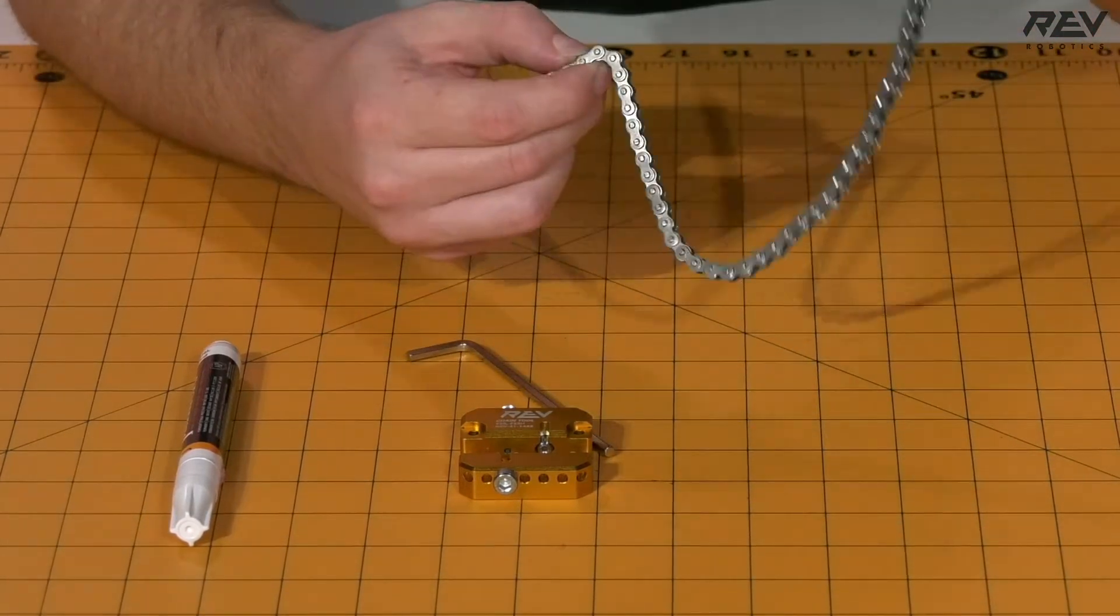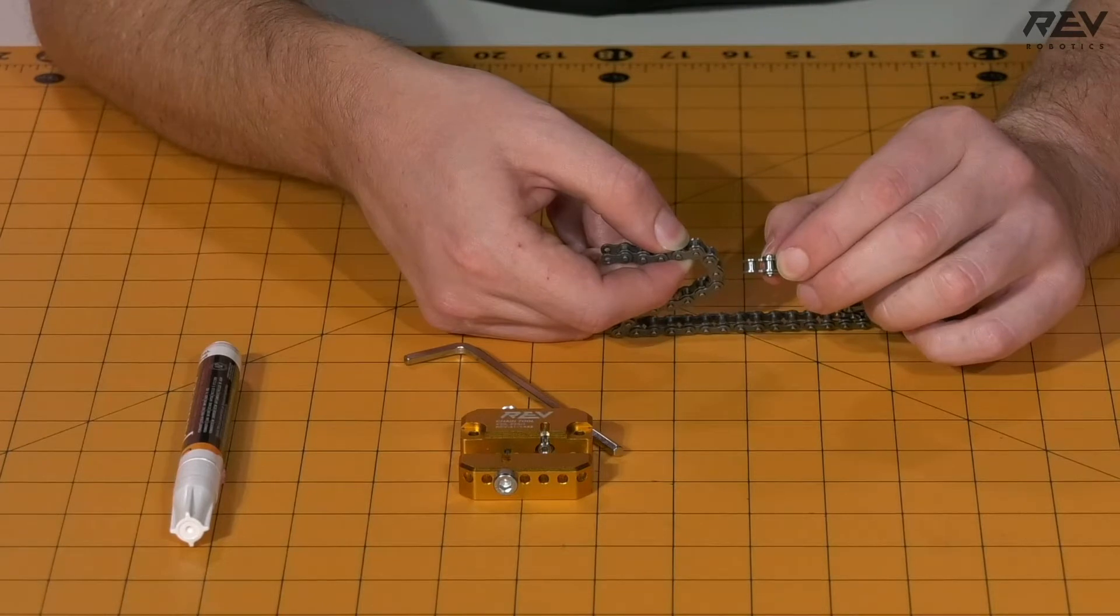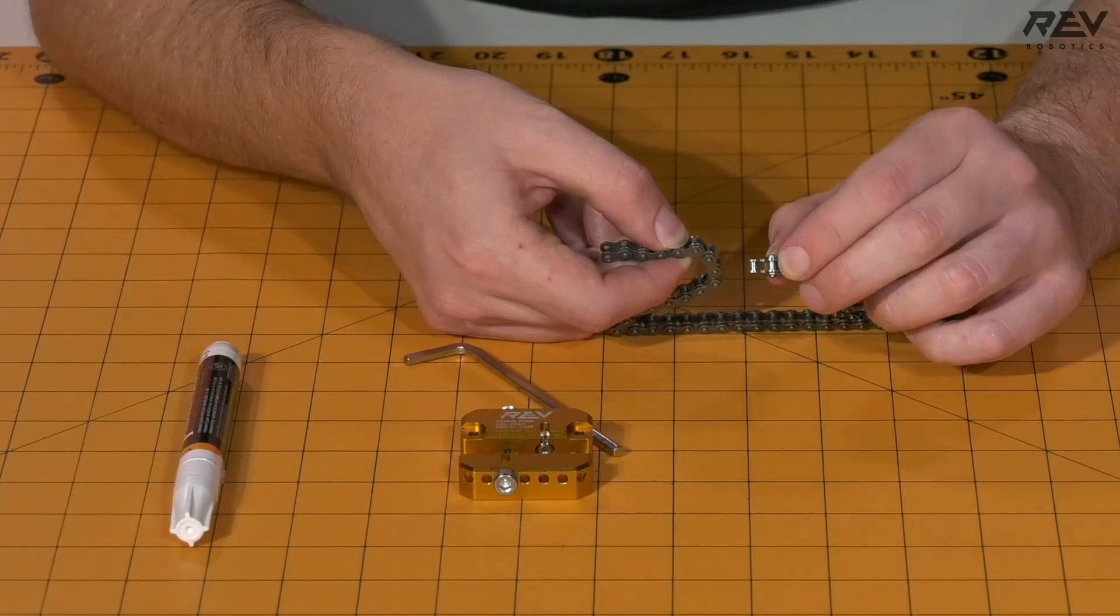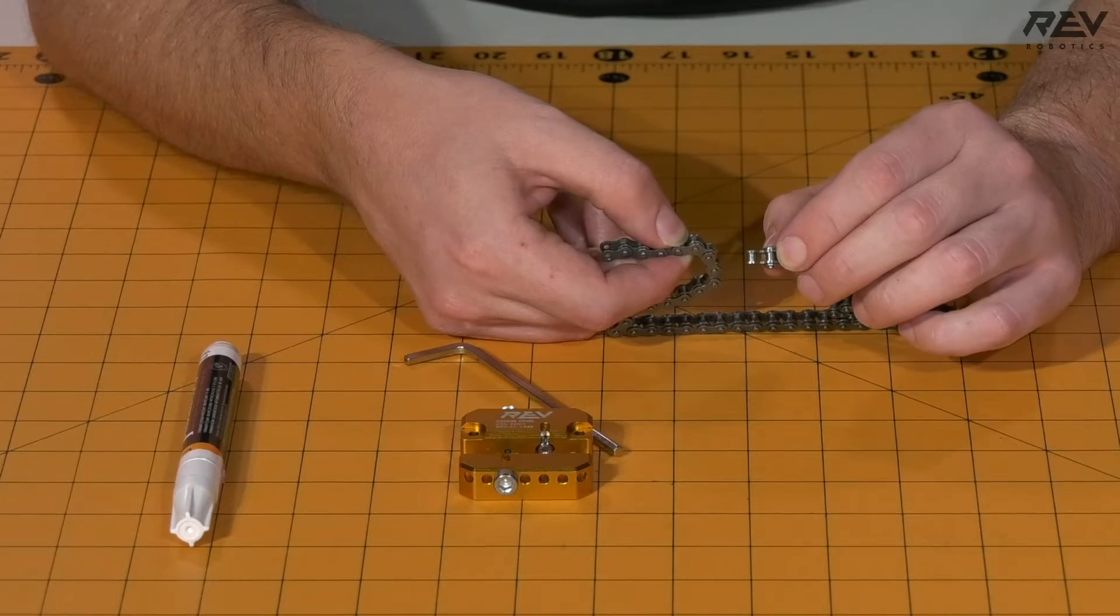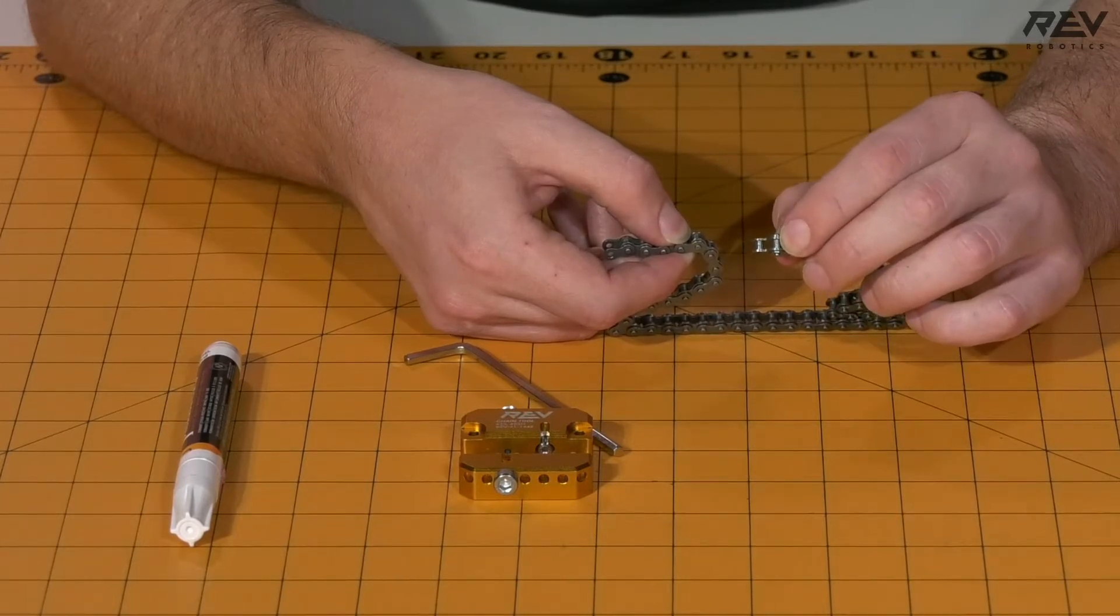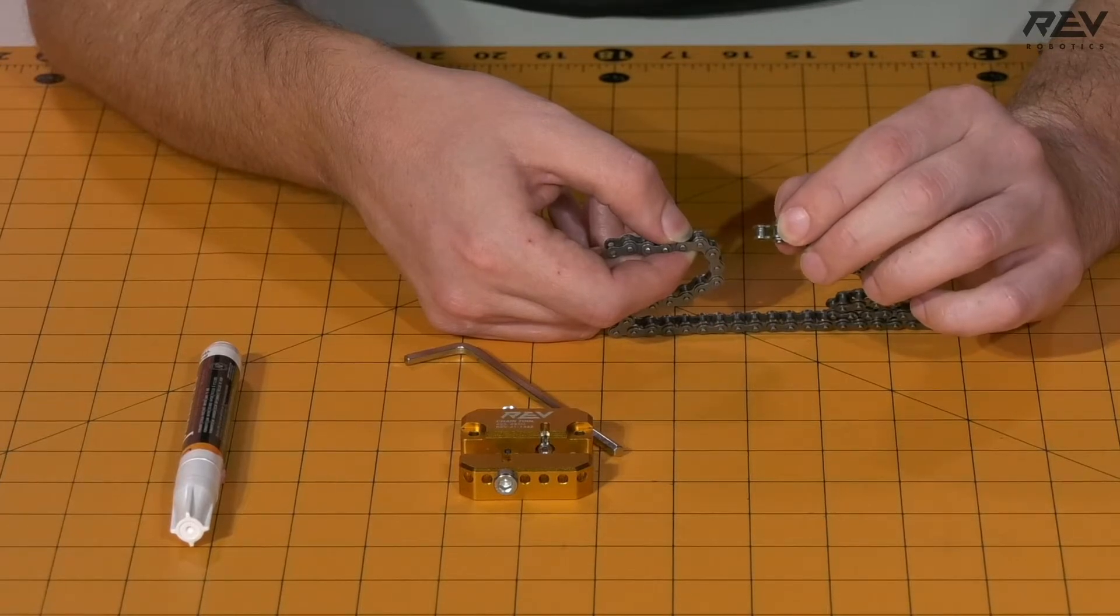When we are breaking chain, we want to pay attention to the end that we have already broken so that we're able to connect the correct link on. This is an inside link, so we need an outside link to be able to connect to it.